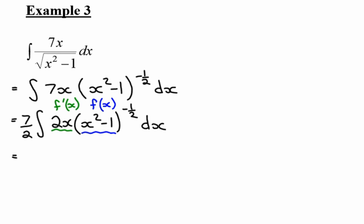Right. So let's apply the rule here. That 7 over 2 just sits there. Times by, I've got my base and I add 1 to the exponent. So negative 1 half plus 1 gives me 1 half. I then divide by that and add my constant of integration.